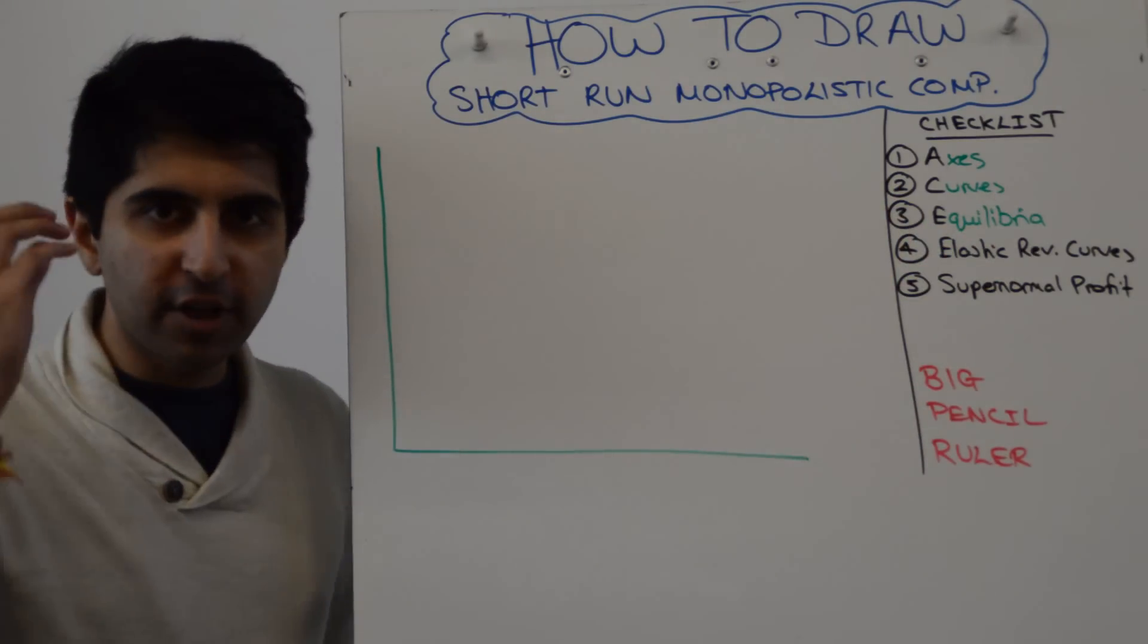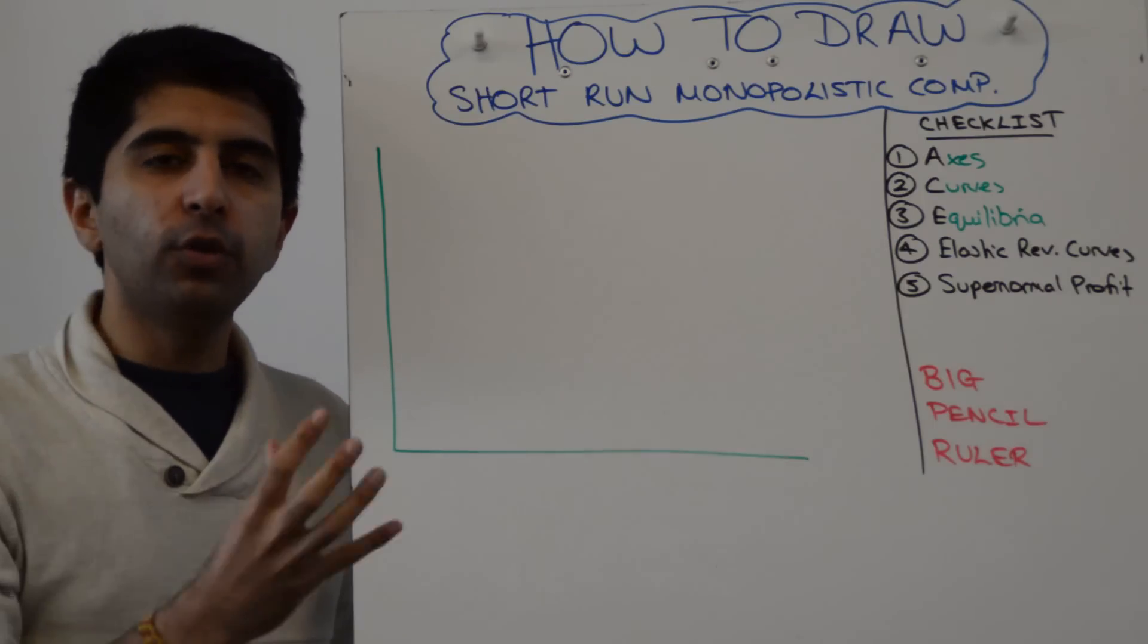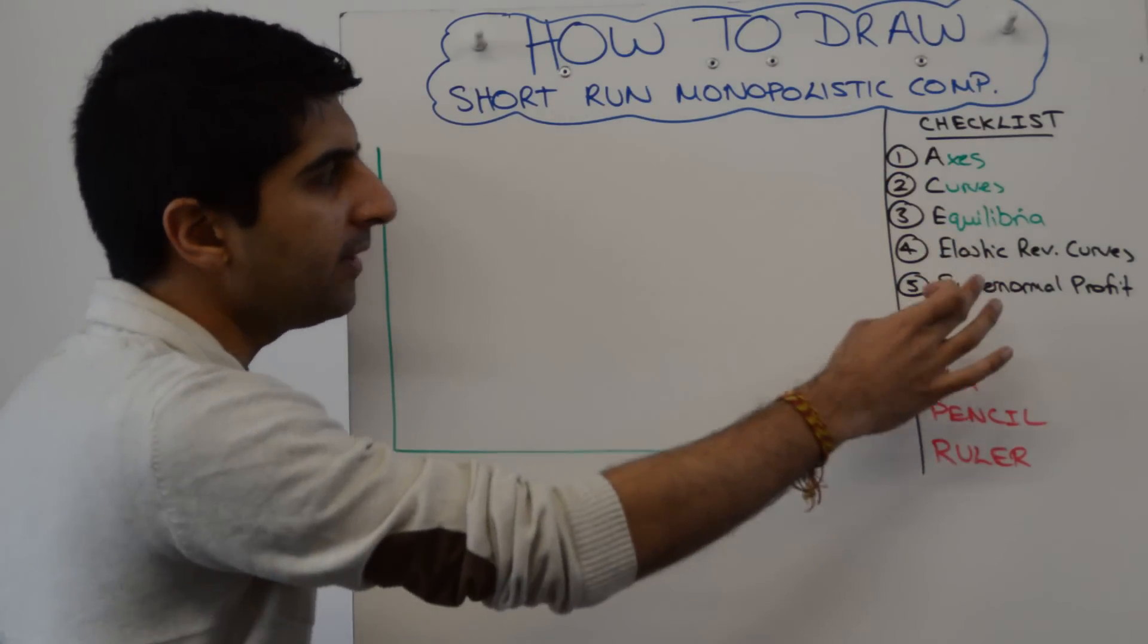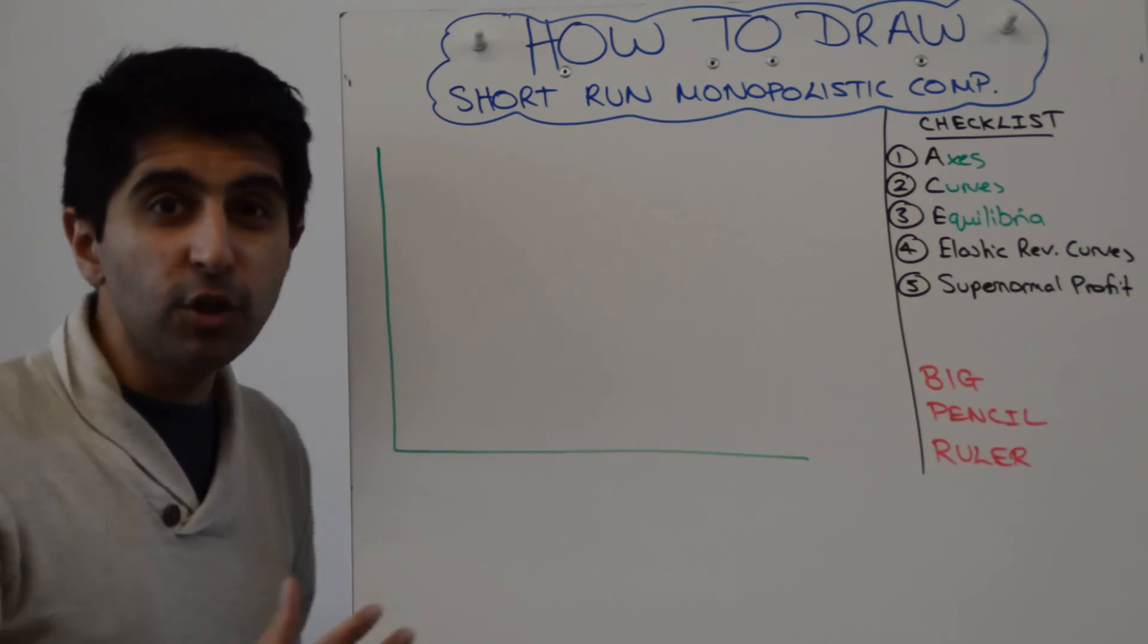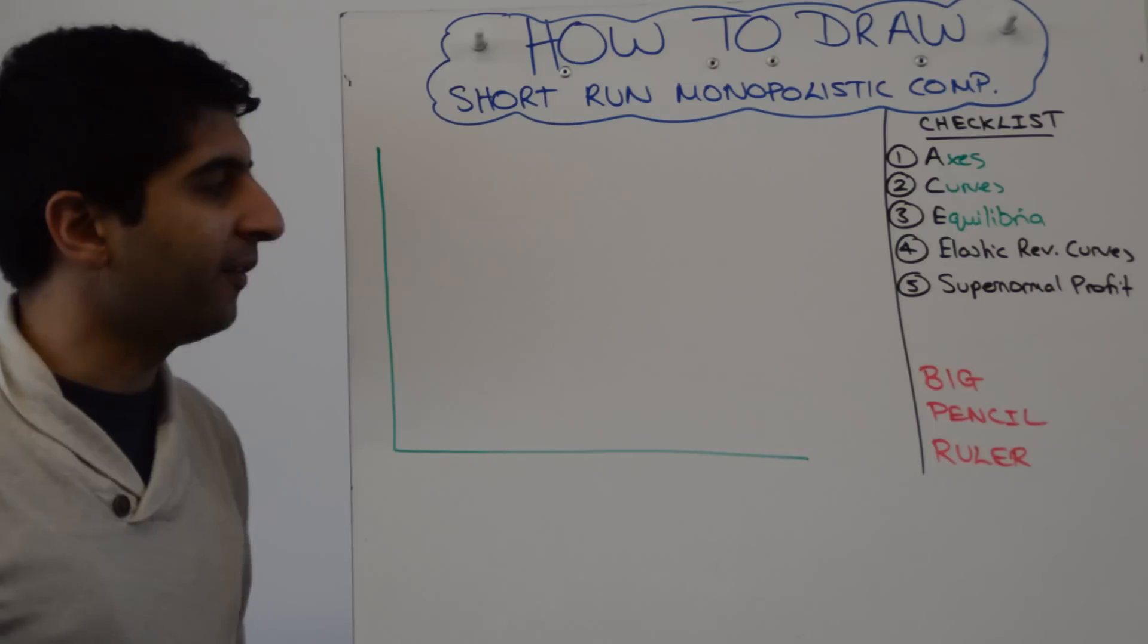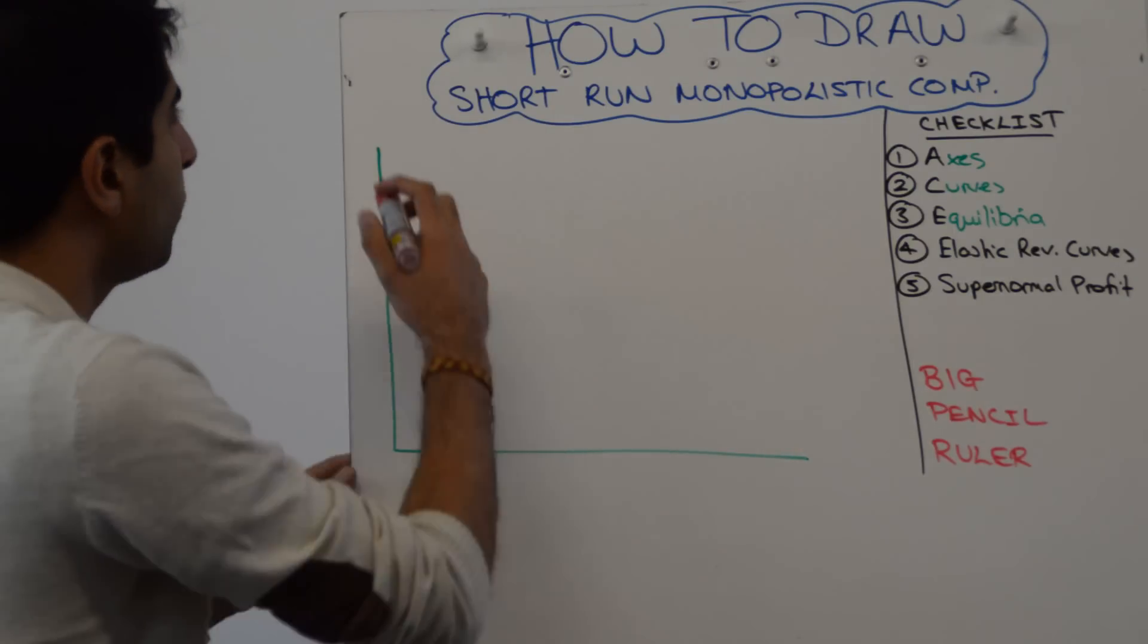We want to go straight to the checklist. Remember this checklist is a mental idea. Before you start drawing, what are you trying to show in this diagram? Well beyond the basics, you're looking to show your revenue curves being slightly more elastic than in monopoly and you're also trying to show super normal profit. So let's get moving on this.